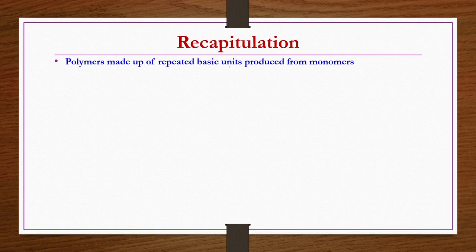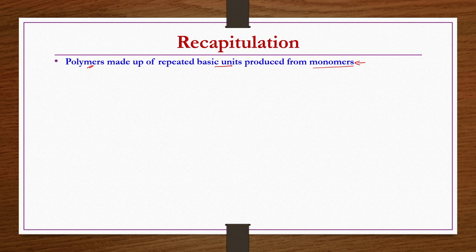We started discussion on the basics of polymers with the definition and classification. Polymers are made up of repeated basic units produced from monomers. These monomers can be of the same molecule or from different molecules. If they are from different molecules, we call them co-monomers, and the polymer formed we call a co-polymer. The purpose of polymer production is to fulfill engineering material requirements, with the primary aim to have very unique physical and chemical properties compared to the base monomers.